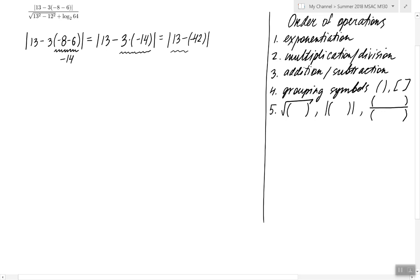Now inside this absolute value, there is nothing but subtraction. What's 13 - (-42)? It is 55. So only after we perform all the operations inside the absolute value can we take the absolute value of 55, which is 55.